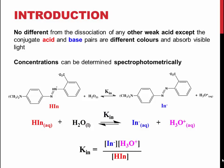This is why indicators are used to show when the pH of the solution has changed. The equilibrium constant, KIN, can be calculated the same way as any other equilibrium constant, using the concentrations of the hydronium ion, conjugate base, and conjugate acid.